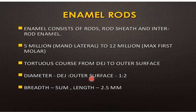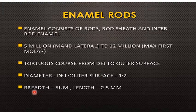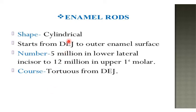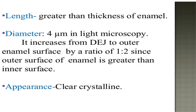The diameter at the outer surface is double that at the dentino-enamel junction. The enamel rod has a cylindrical shape, running from the dentino-enamel junction to the outer surface, numbering about 5 million in the lower lateral incisor to 12 million in the upper first molar. The length of the enamel rod is greater than the thickness of the enamel. The diameter is about 4 microns, increasing from the dentino-enamel junction to the outer enamel surface by a ratio of 1 to 2, since the outer surface of the enamel is greater than the inner surface.